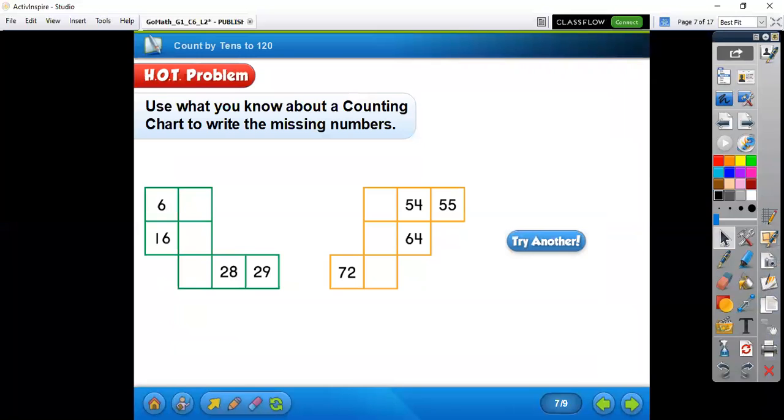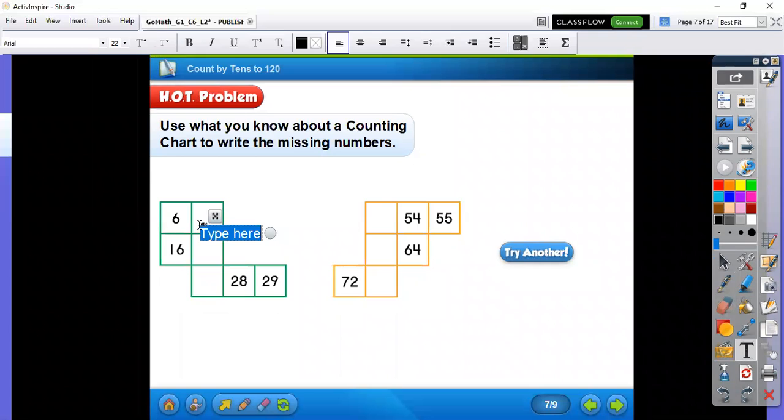So it's good to have your hundreds charts available. And we can even try this one where it's like a puzzle. So what would go in this box? What comes after 6? Do you know? Right, 7. So we'd put a 7 here.